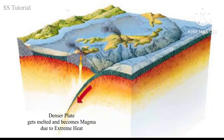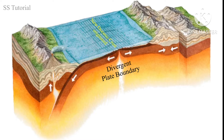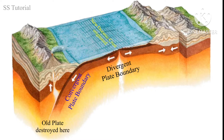The denser plate gets melted after going to some depth due to extreme heat and creates magma. As plates are being destroyed at this type of plate boundary, it is known as a destructive plate boundary. At the divergent plate boundary, two plates move apart and create new crust, while at the convergent plate boundary, that newly created crust eventually gets old and is destroyed due to subduction.